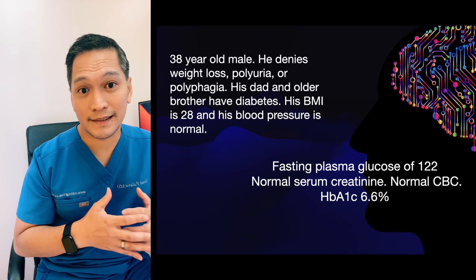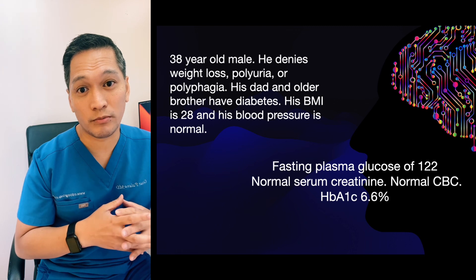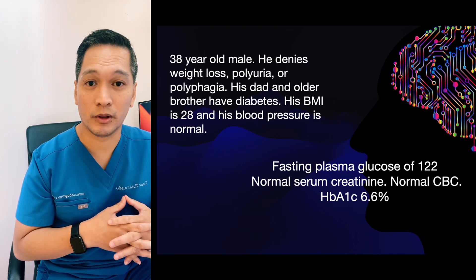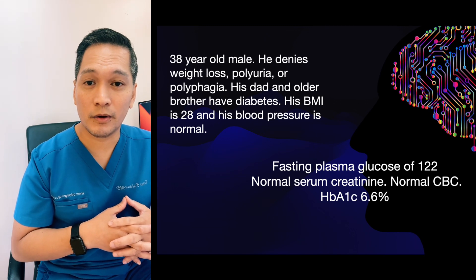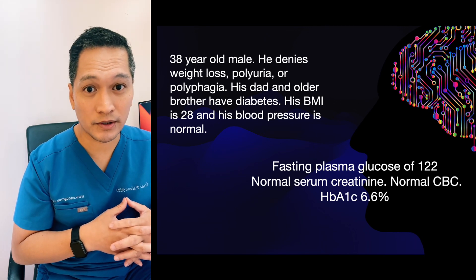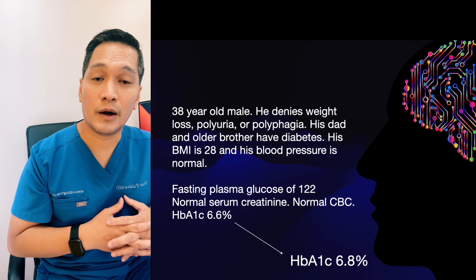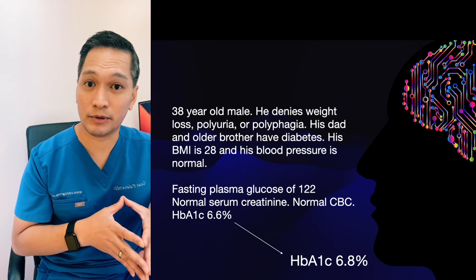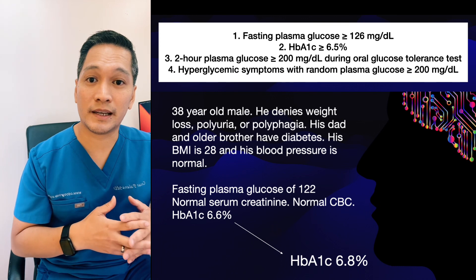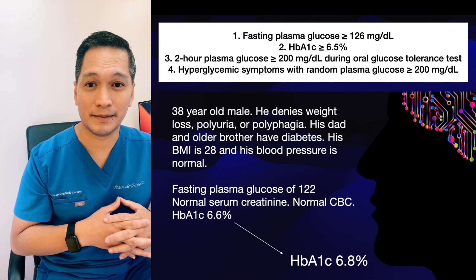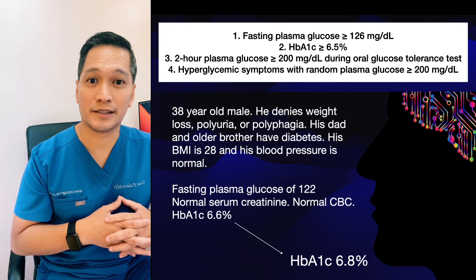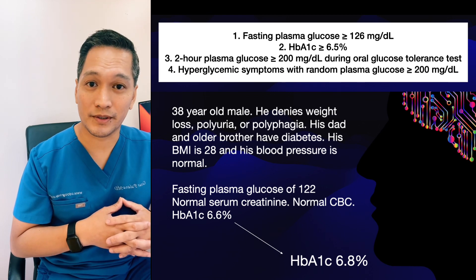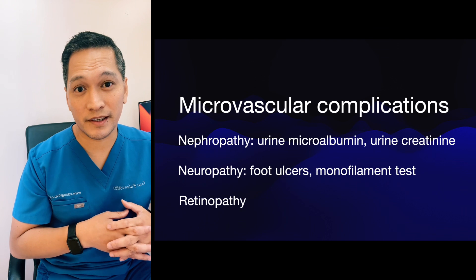Going back to the case: since patient X has a normal plasma glucose of 122 but an abnormal hemoglobin A1c of 6.6%, we have to order another A1c to confirm the diagnosis. A week later, the second hemoglobin A1c is 6.8%. Since he presented with asymptomatic hyperglycemia with two abnormal A1c tests, this confirms the diagnosis of diabetes.